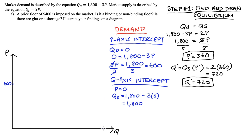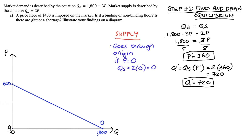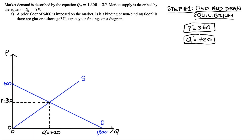With those two intercept points I can join them to form the demand curve. For the supply function, when price is 0 the quantity supplied is also 0, so the supply line goes through the origin. I also know that the supply curve passes through the equilibrium point where price is 360 and quantity is 720, so I can anchor the shape of the supply curve to that equilibrium point.